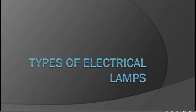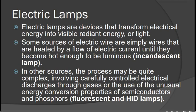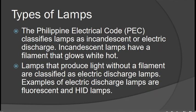Now we will go to the types of lamps. Electric lamps are devices that transform electrical energy into visible radiant energy, or light. Some lamps are simply wires heated by a flow of current until they become hot enough to be luminous. Other sources of light can be electrical discharges from gases, or the use of semiconductors also known as LEDs, and phosphors.